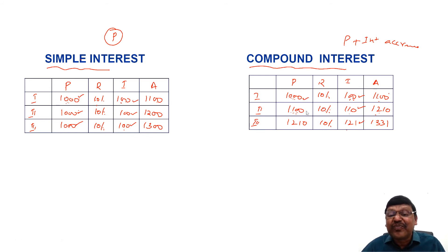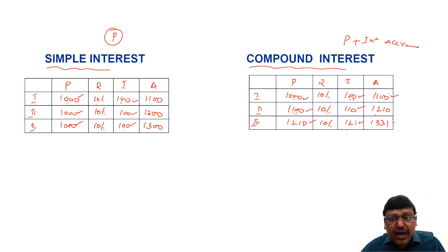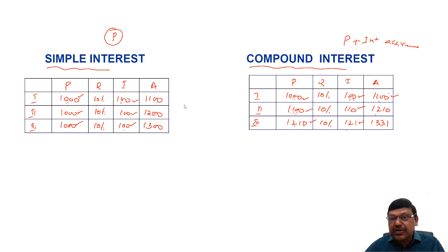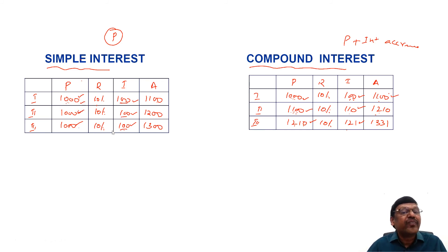If you observe, in compound interest, interest for any one year is not the same because the principal is not the same — it keeps changing. Whatever is the amount at the end of the first year becomes the principal for the second year; the amount at the end of the second year becomes the principal for the third year, and so on.